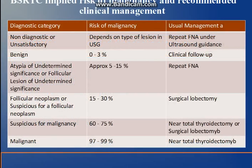The importance of this system is that according to each diagnostic category, there is a risk of malignancy, and the advantage for the clinician is that there is a usual management approach for that category. For the first category — non-diagnostic or unsatisfactory — the risk of malignancy cannot be stated, so repeat FNAC is done. For the benign category, clinical follow-up is done.